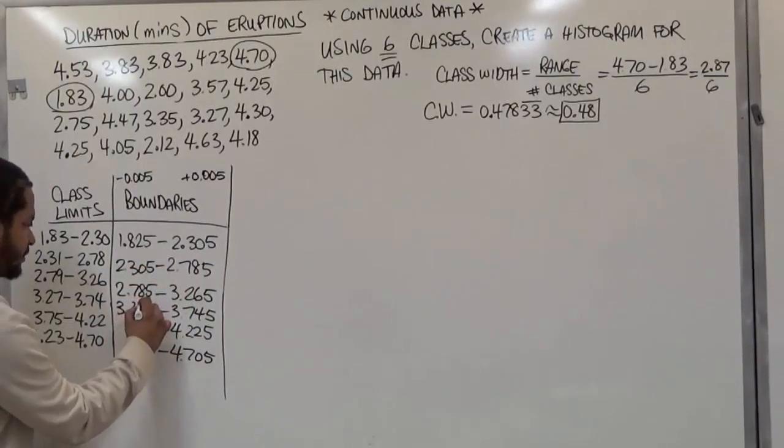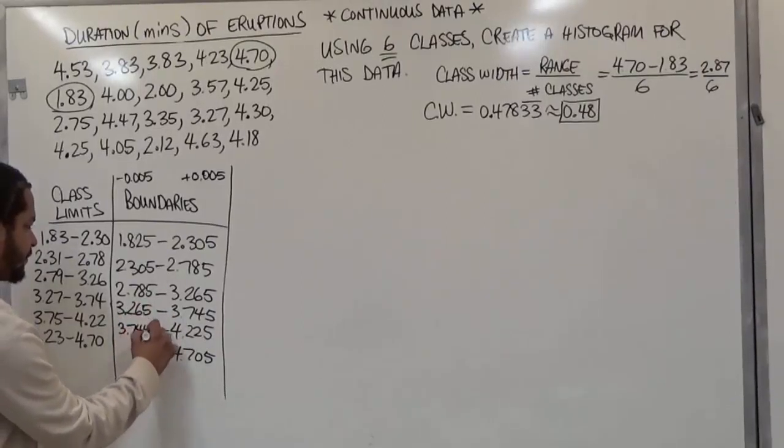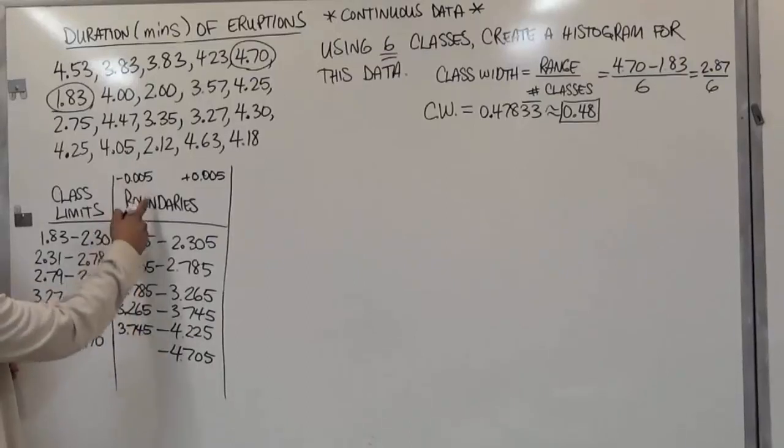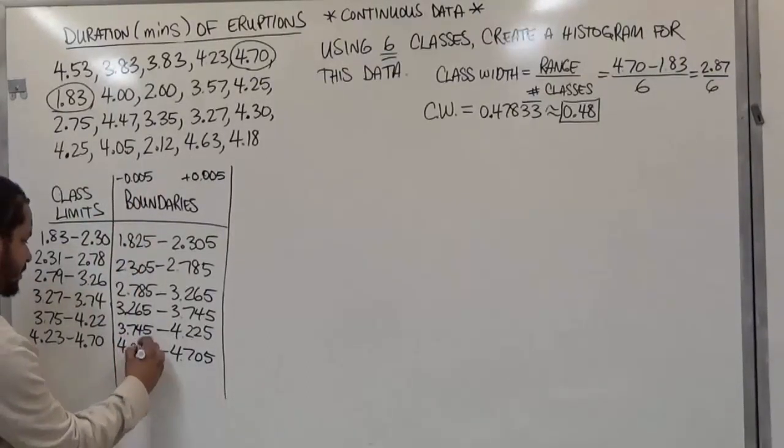Again, the same goes for this one, 3.745. And subtracting the negative 0.05 from this number again, we get 4.225.